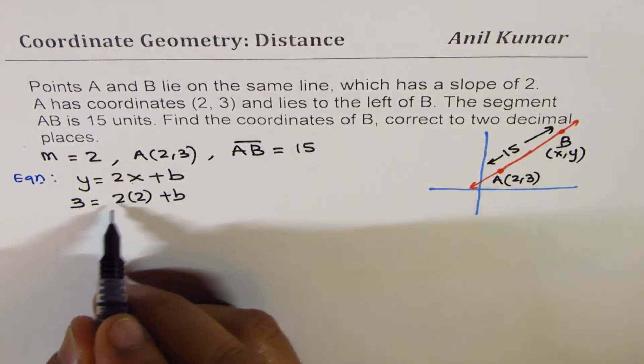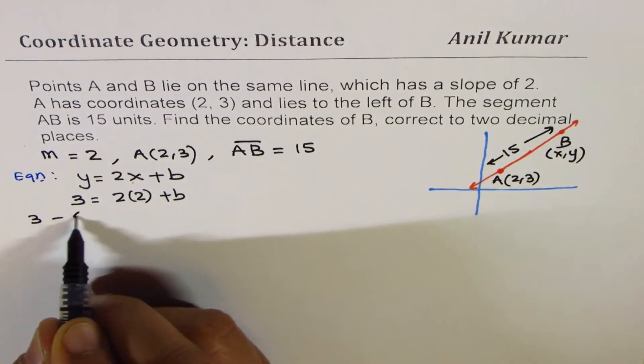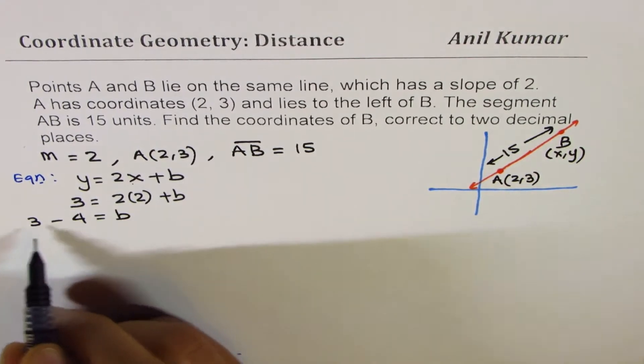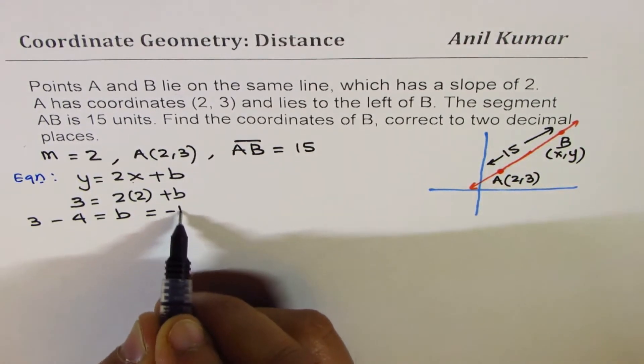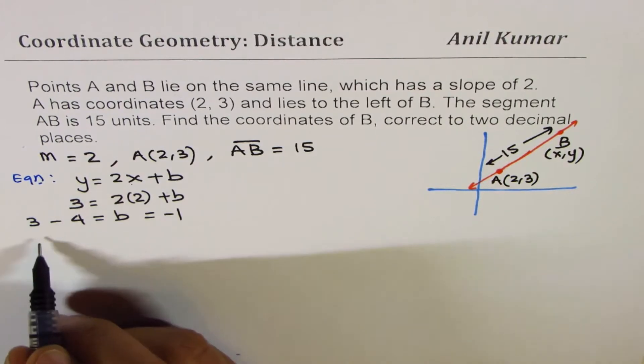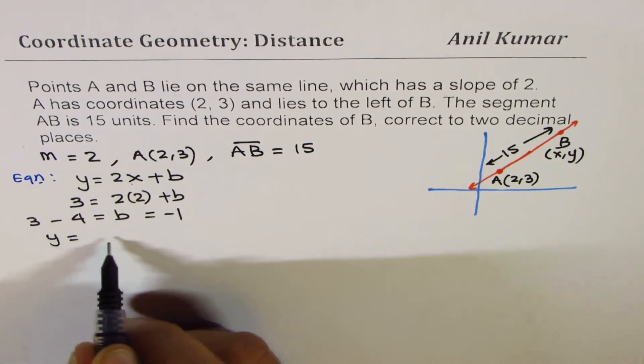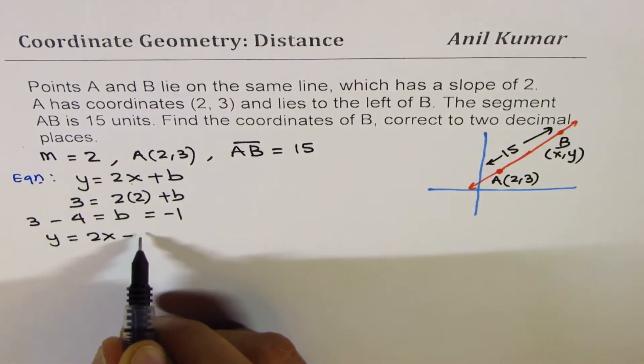And now, we can solve for b. So, it is 3 - 4 = b. 3 - 4 is -1. So, once you get b, we can write equation of line is y = 2x - 1.